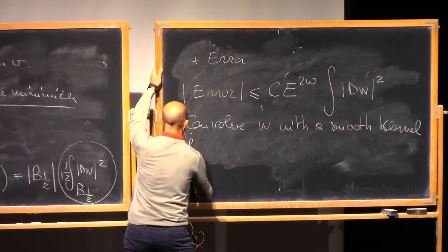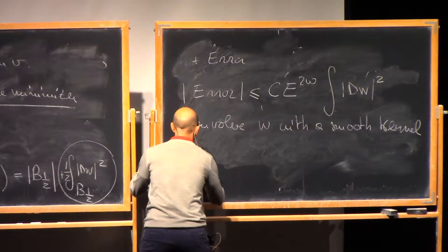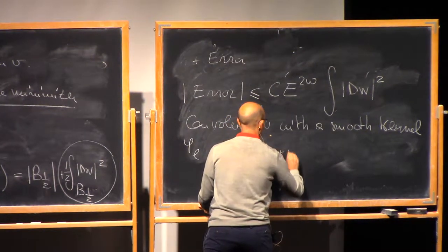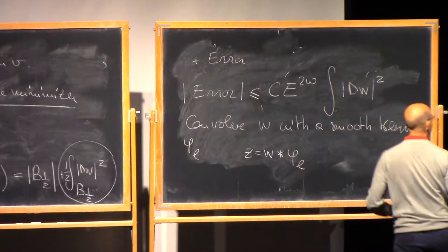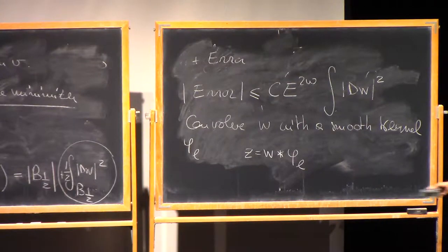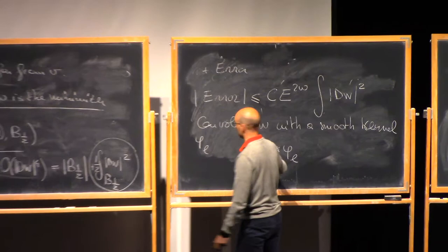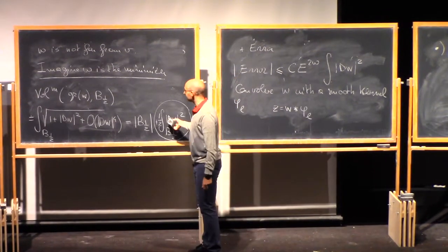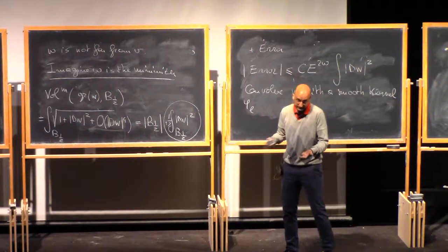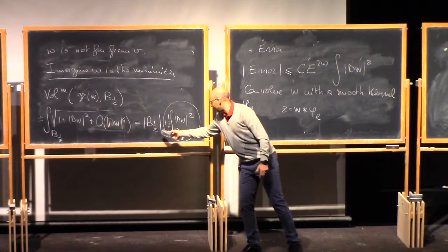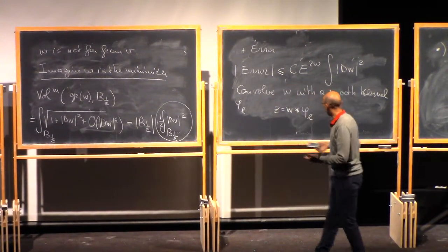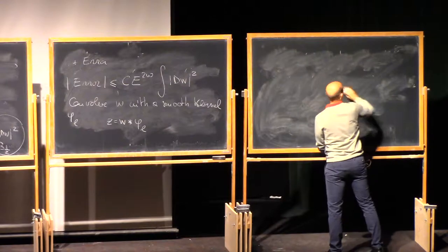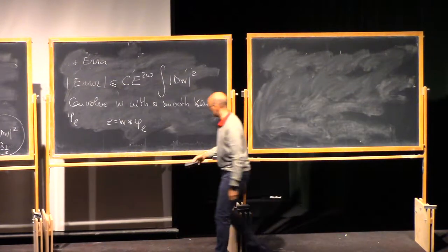So let us say the smooth kernel is φ, and let me put L as the size of the kernel. So then I define z to be equal to w star φ_L. Now let me compute the Dirichlet energy. Of course, w star φ_L will have a Lipschitz constant which is less or equal than the Lipschitz constant of w, up to constants. And so if for w the area is essentially the Dirichlet energy, then for z the area of the graph would also be the size of the domain plus the Dirichlet energy.